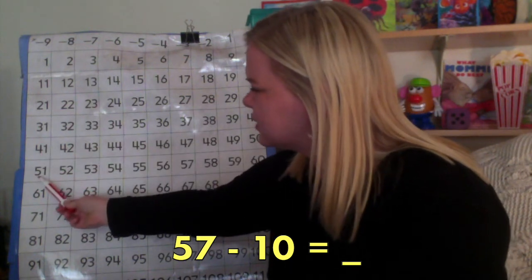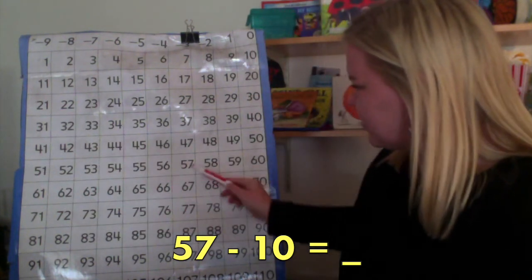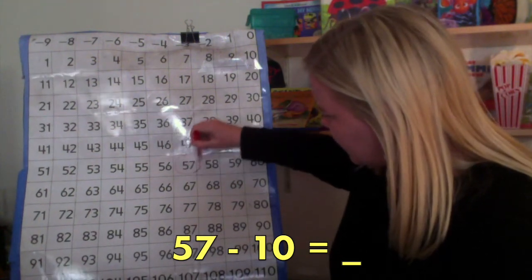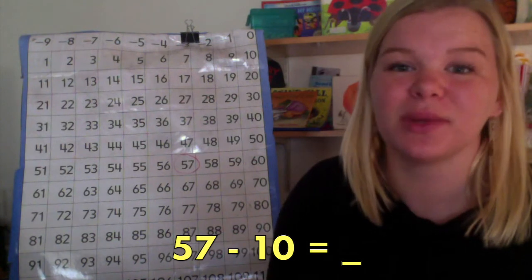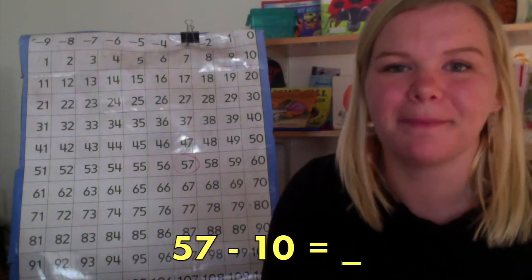There it is. So, now we need to find 57. Oh, right here. So, we start at 57 and because we are subtracting 10, we need to count back.